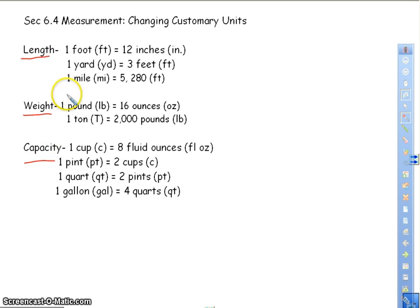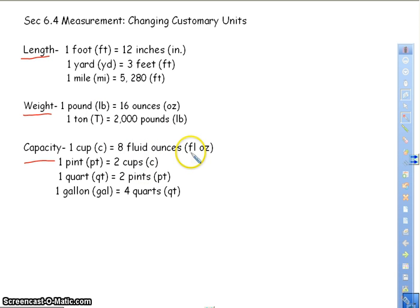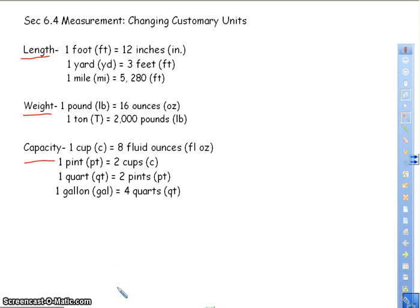For weight, we use ounces, pounds, and tons. And for capacity, we use fluid ounces — make sure you're paying attention to whether you're using fluid ounces or regular ounces. Fluid ounces, cups, pints, quarts, and gallons.